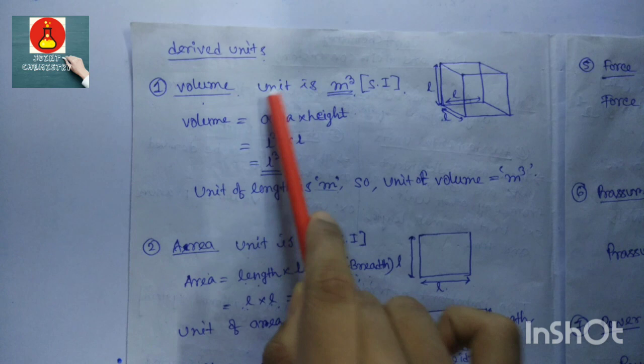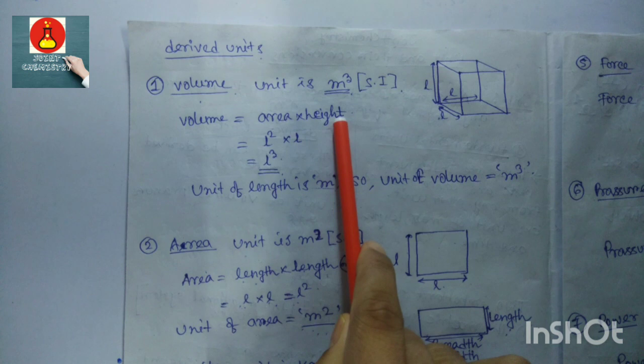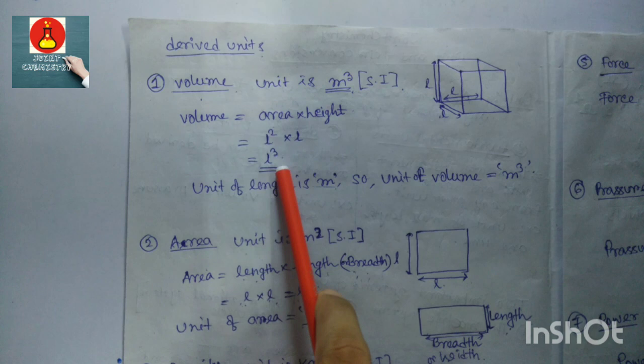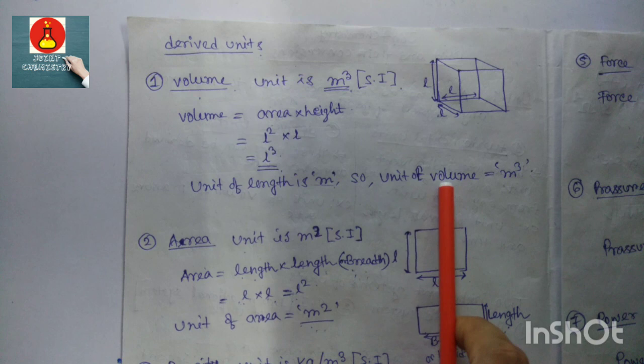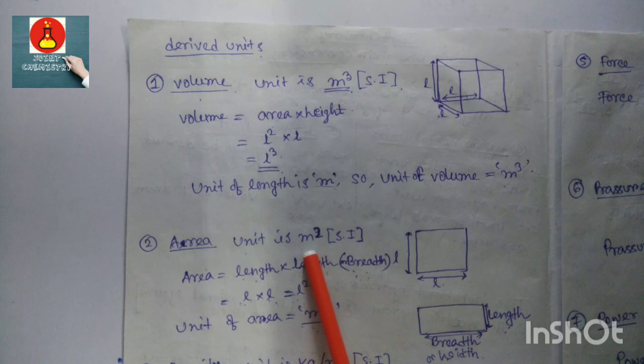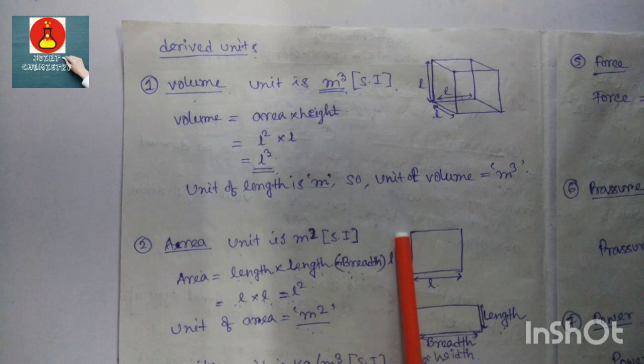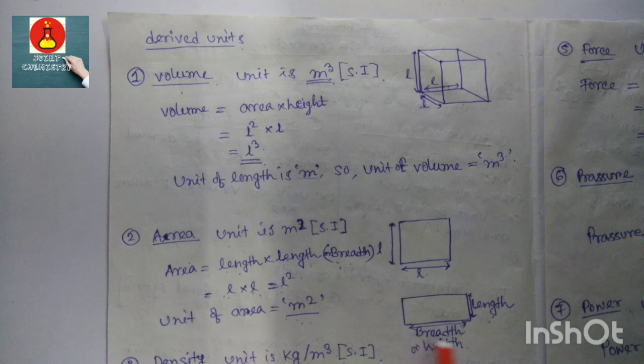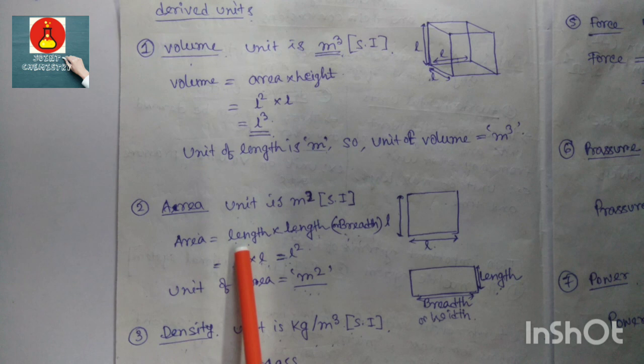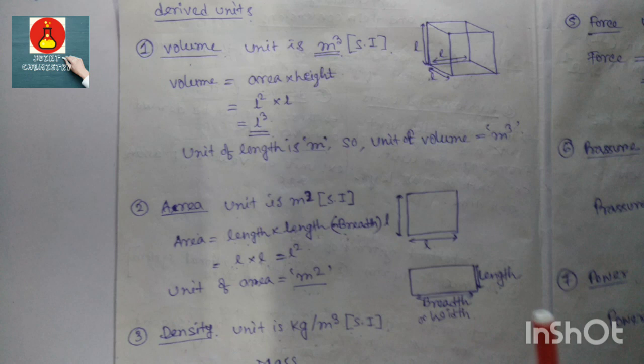Now let's derive some units. Volume: the SI unit is meter cubed. Volume equals area times height; area is L squared and height is also a length, so total is L cubed, giving a unit of m³. Area: the SI unit is meter squared. Area equals length times length, so L times L equals L squared, giving a unit of m².